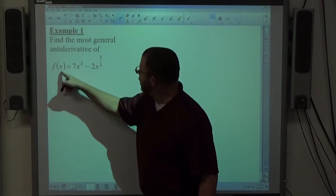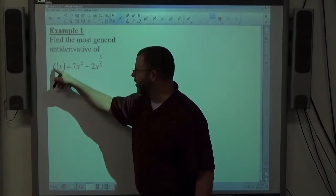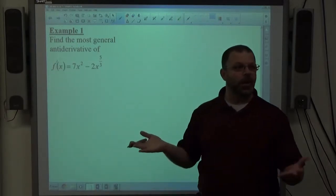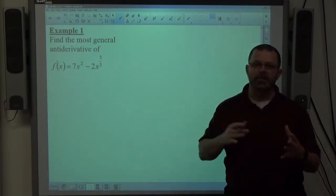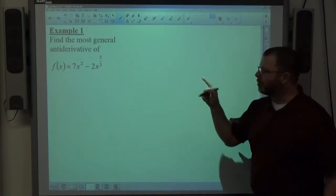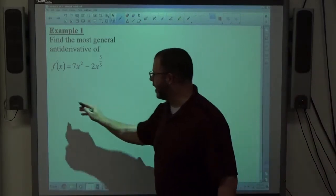So if this is the function, and it says find the most general anti-derivative of this, we're looking at the derivative. They're not going to identify it as such, but they're going to say find the anti-derivative of this function. I like to put an f prime on it, so then I'm finding f of x.